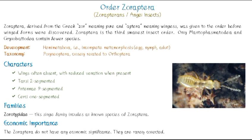In terms of characters, the wings are often absent, with reduced venation when present — if wings are present, they are very reduced. The tarsi are 2-segmented and the antennae are 9-segmented.